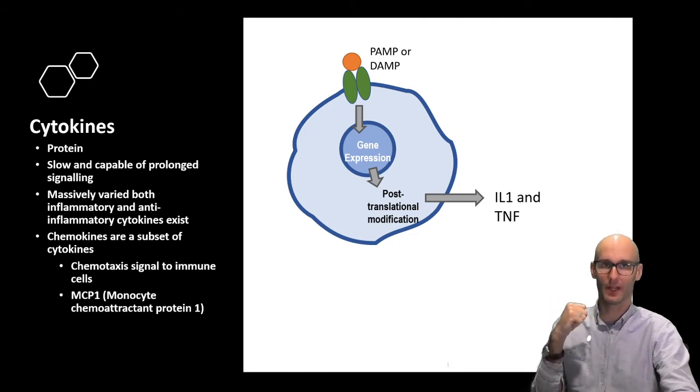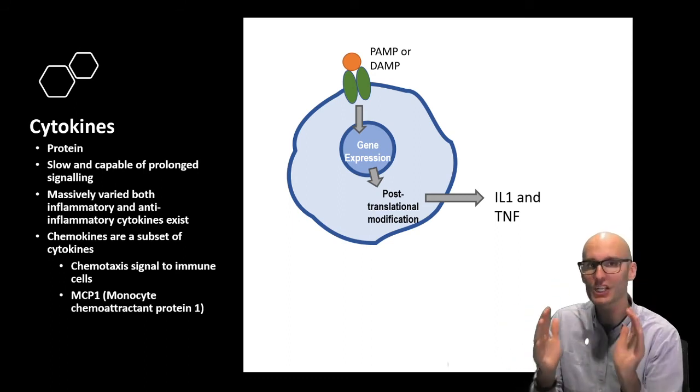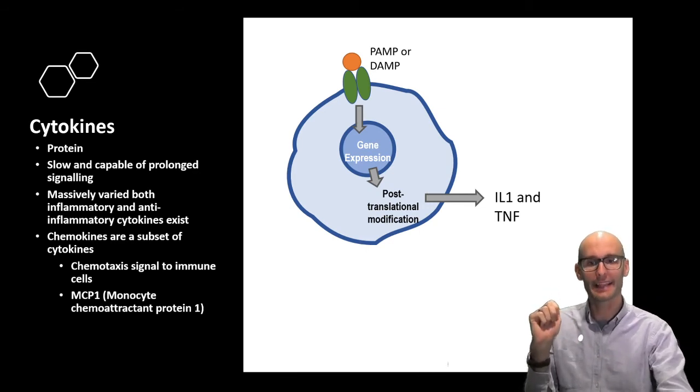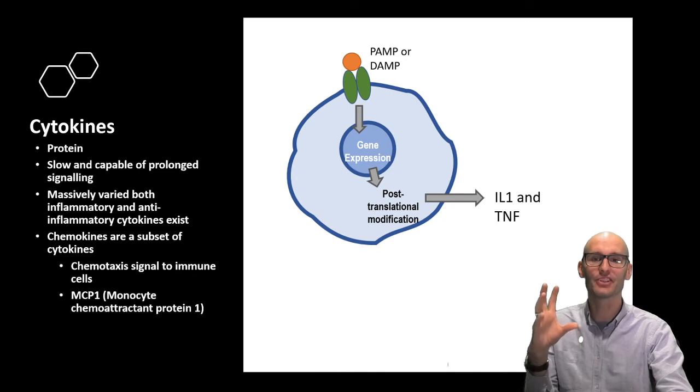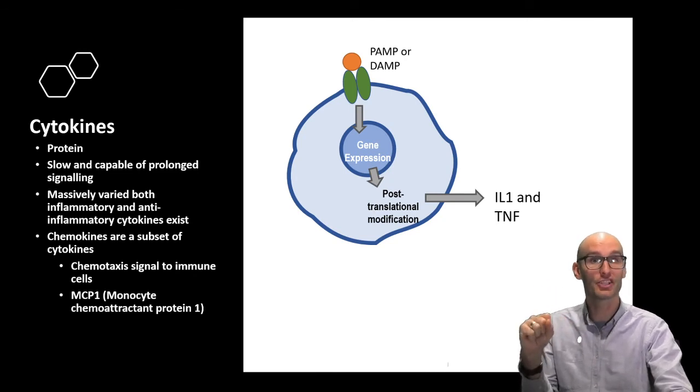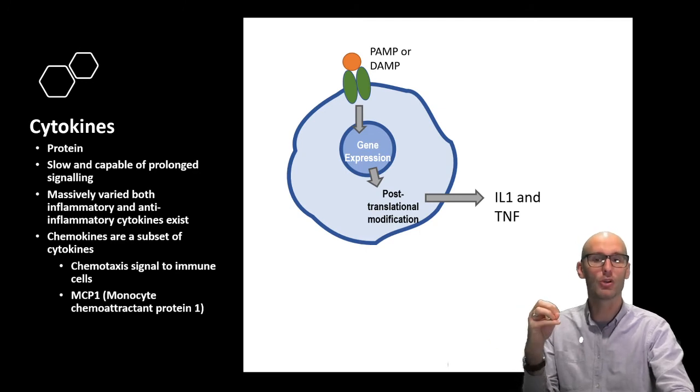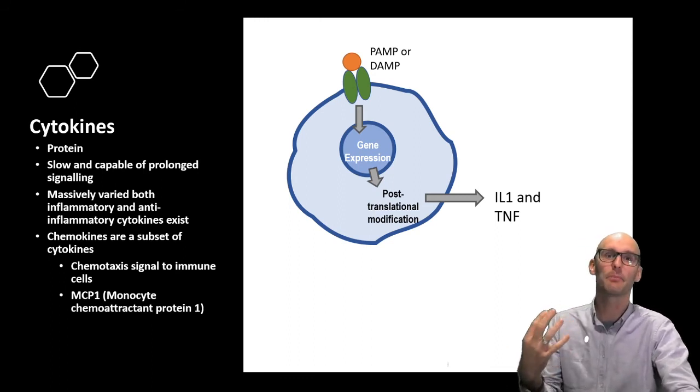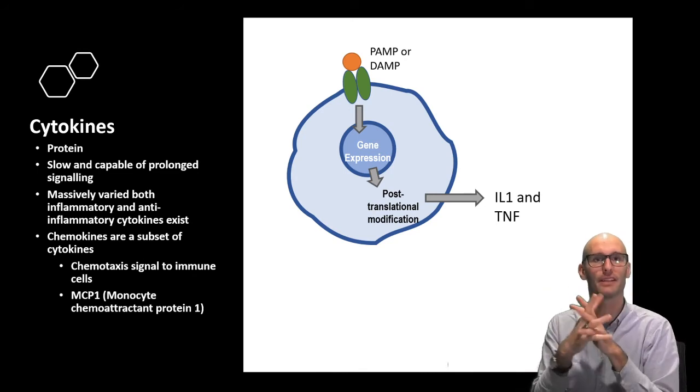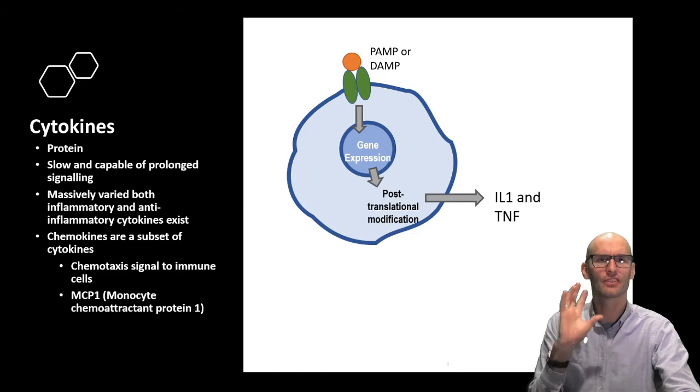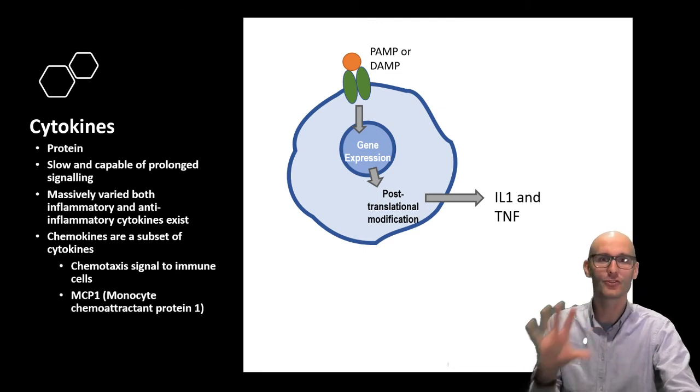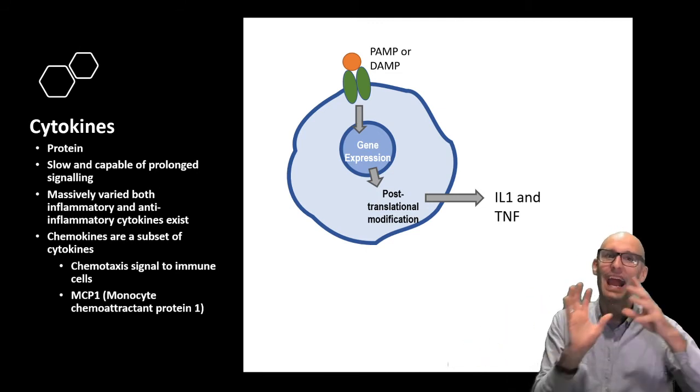Here we've got interleukin-1, IL-1, and TNF, TNF-alpha. These both require gene expression and post-translational modification. The reason is these are extremely inflammatory, and so the cell wants to be very sure before it releases them. Without this post-translational modification, these inflammatory molecules won't be released and they won't be very inflammatory. It requires two stages. You need the switching on of the genes, and then you need a second signal to initiate these post-translational modifications, which are cleavage, the cutting of the protein, which will activate it and now it can be released and be inflammatory. It's got these two checkpoints because we don't want to accidentally release these molecules because they're so inflammatory and inflammation can be damaging.